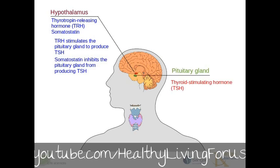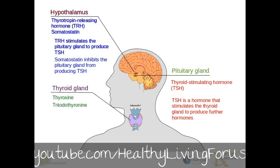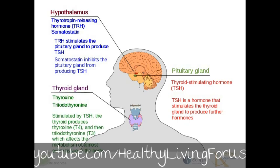Next, let us look at the pituitary gland. TSH, thyroid-stimulating hormone, is a hormone that stimulates the thyroid gland to produce further hormones. Now, to the thyroid: stimulated by TSH, the thyroid produces thyroxine, T4, and then triiodothyronine, T3, which affects the metabolism of almost every tissue in the body.